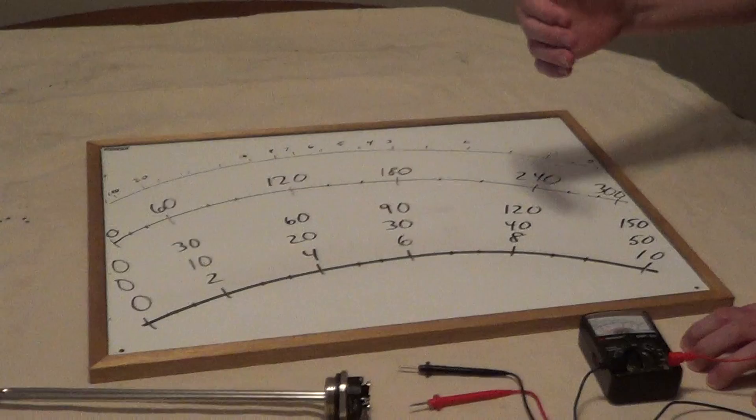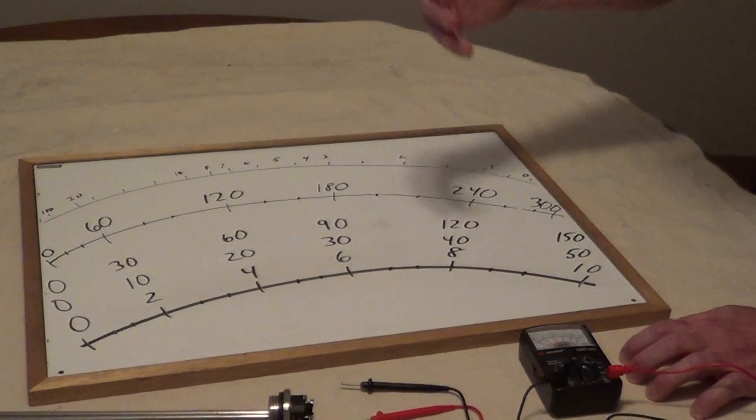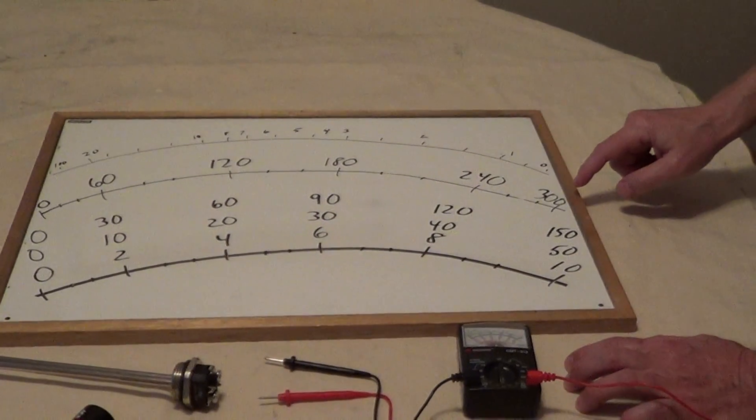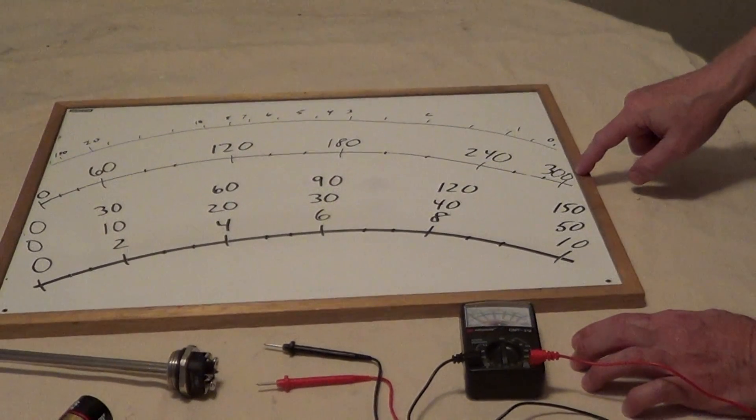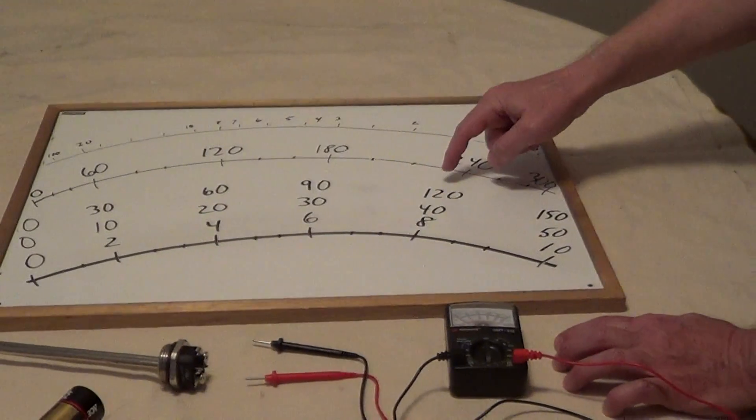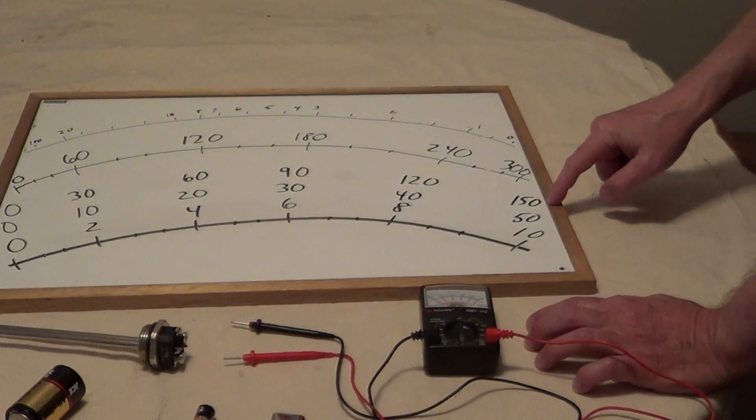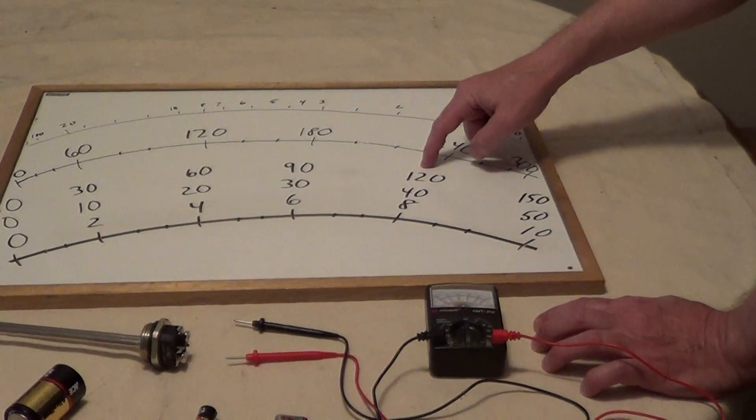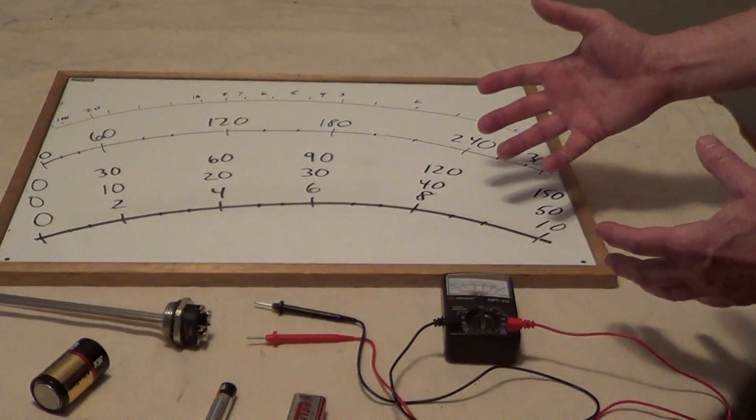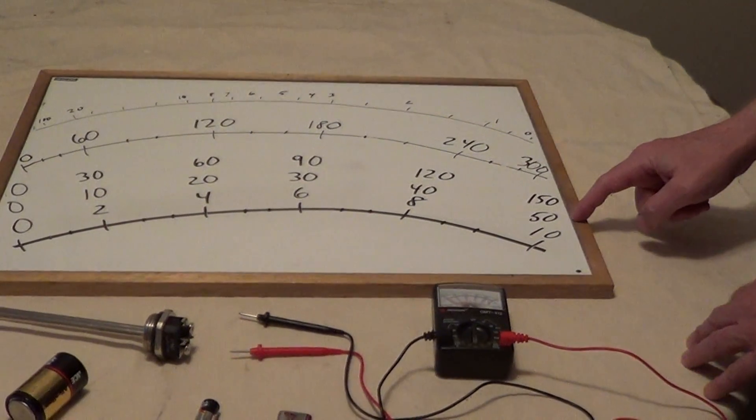For example, if you're testing a water heater that's 240 volts, you would set your dial to 300 alternating current and test for 240. If you're testing a regular outlet which is 120, you would set your meter to 150 and test for the 120. If you're testing a 12 volt battery, you would change it to 50 DC.